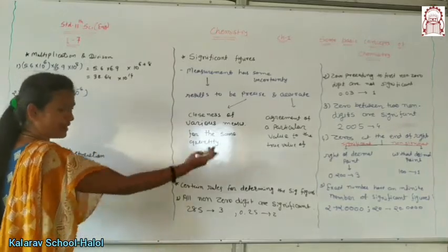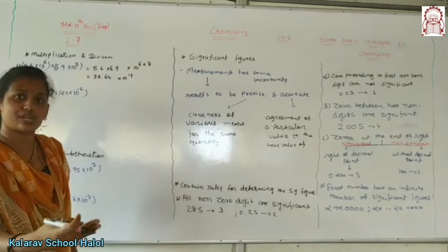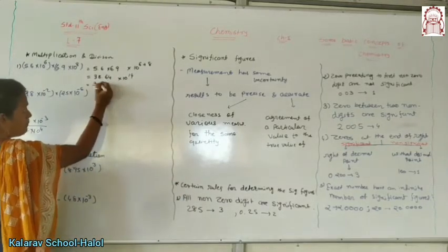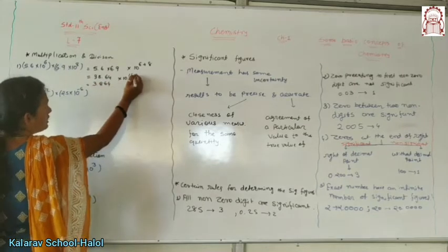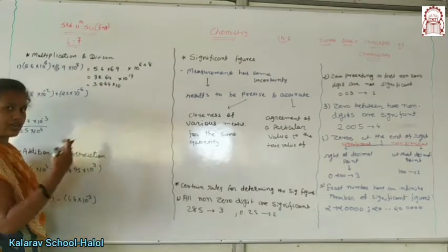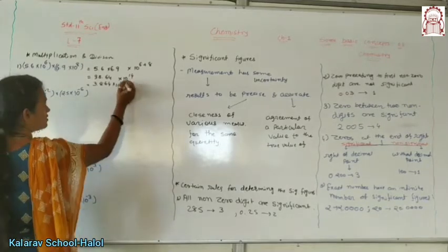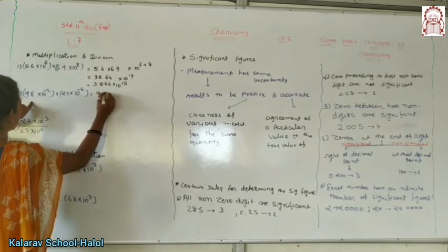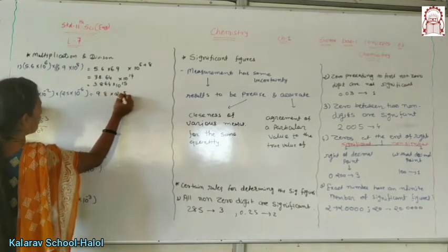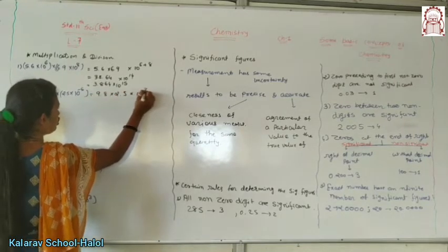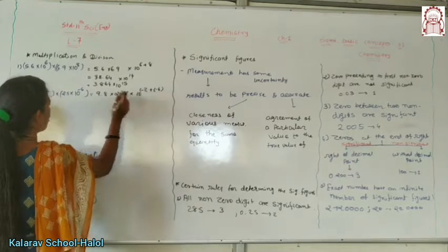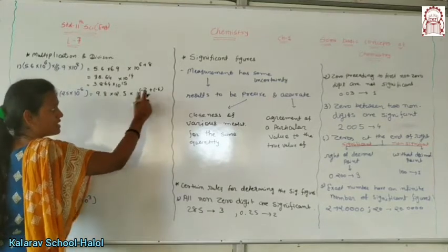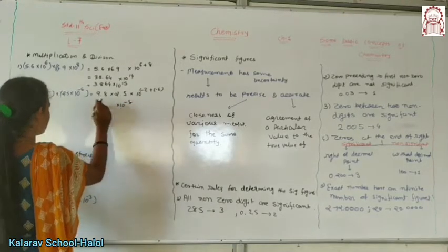If we move left to right, then what happens to the power? We subtract — minus. So here the decimal moves right to left, giving us 3.864. Here we have plus 1. So here we have 5.0. For multiplication, 9.8 × 4.5 × 10^(2+6). Here we have minus 2 and minus 6, so plus minus minus — giving us 10^(-8).